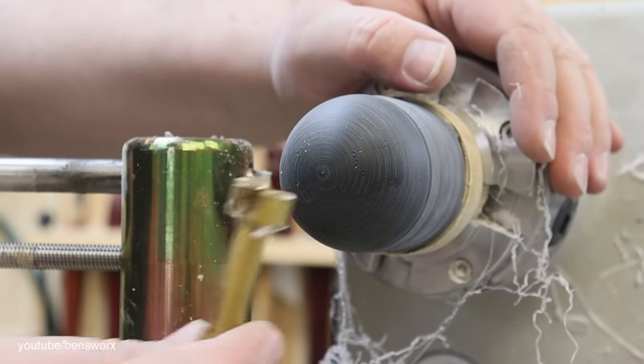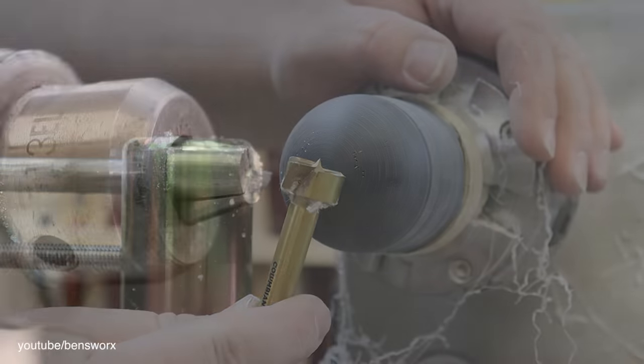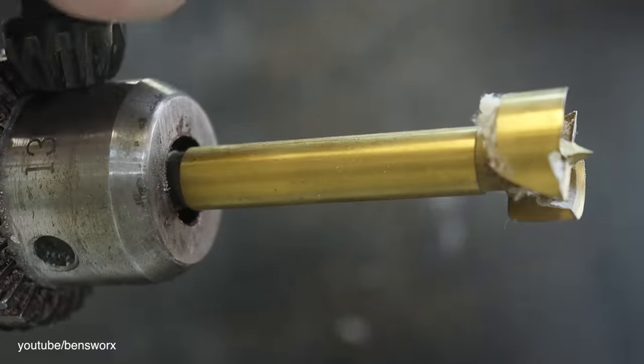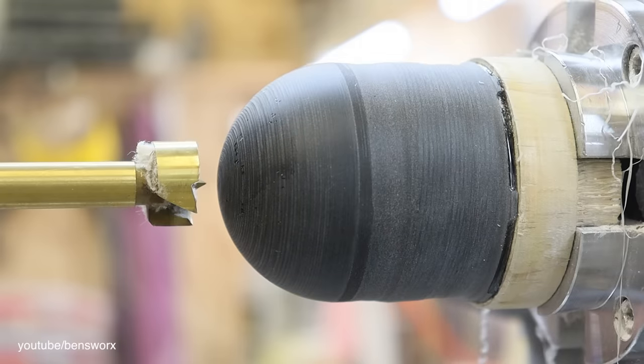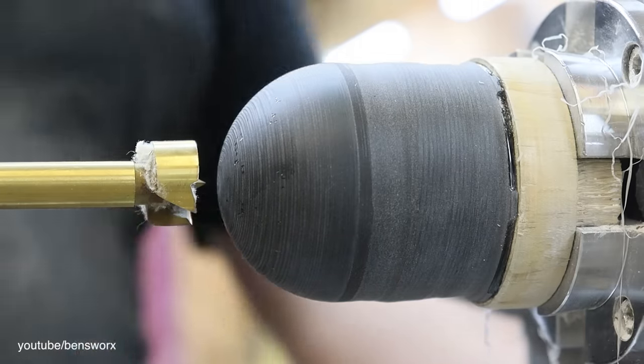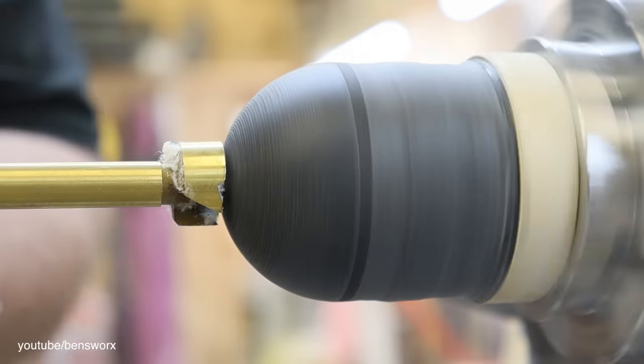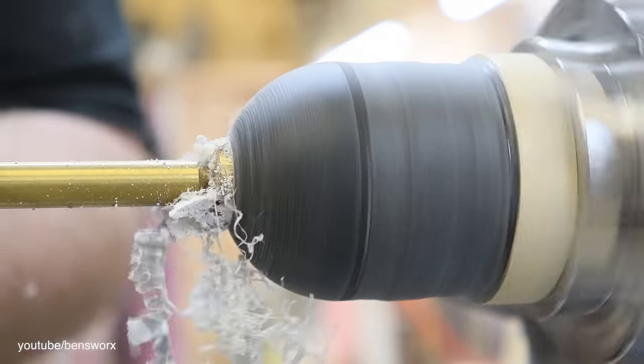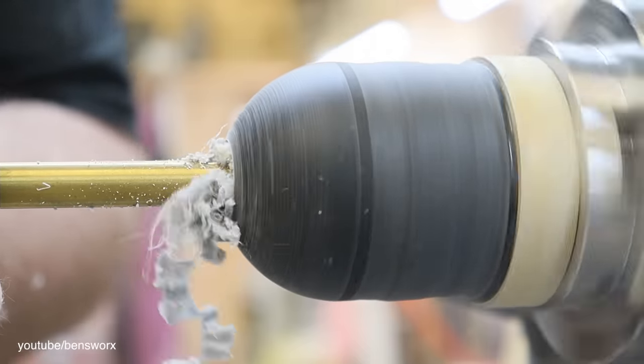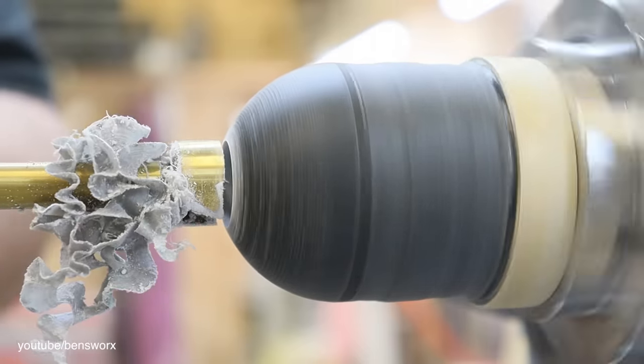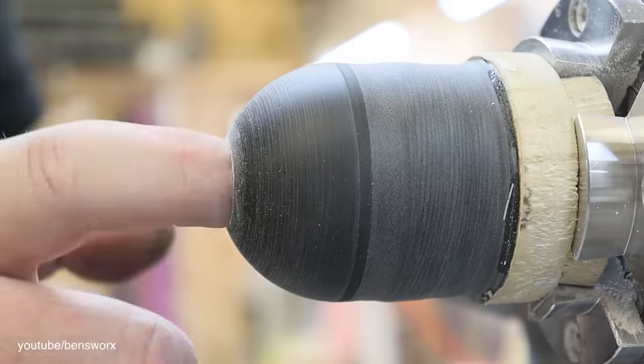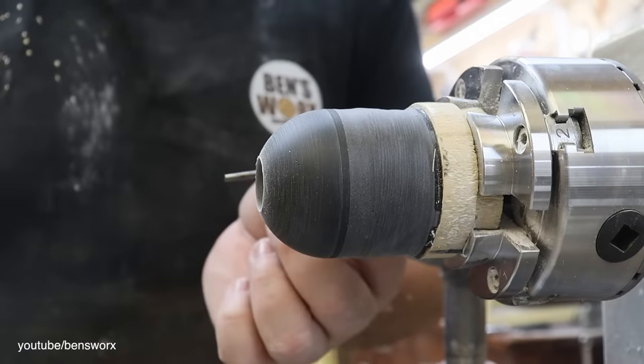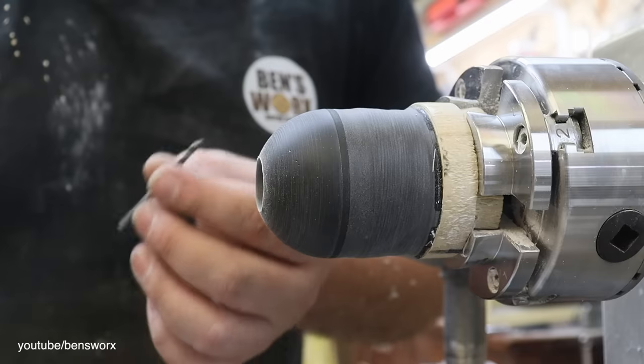So now that I have the front of the ball shaped, I can go ahead and drill my hole. Now before I take this off the lathe, I'm going to drill one more small hole all the way through. Now you'll see why I'm doing this towards the end of the video.